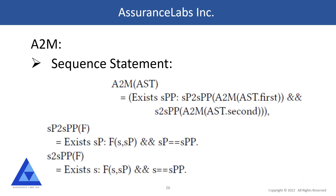For a sequence statement, I take the first part, apply A2M to it — which returns an equation in s and sp — then apply a function we call sp-to-spp (which replaces every instance of sp by spp), then apply A2M to the second term replacing every instance of s by spp, then quantify spp with the existential quantifier. The result is an equation between s and sp for the overall sequence. That is why you see nested calls within the Mathematica code — the longer the sequence, the deeper the nesting.